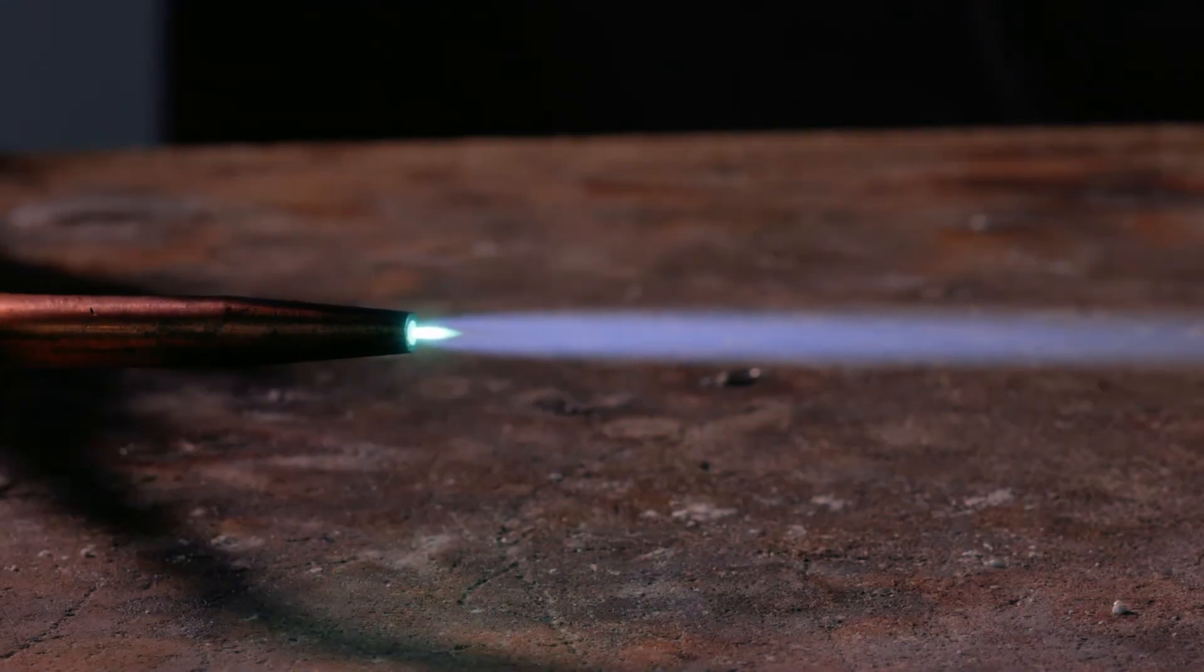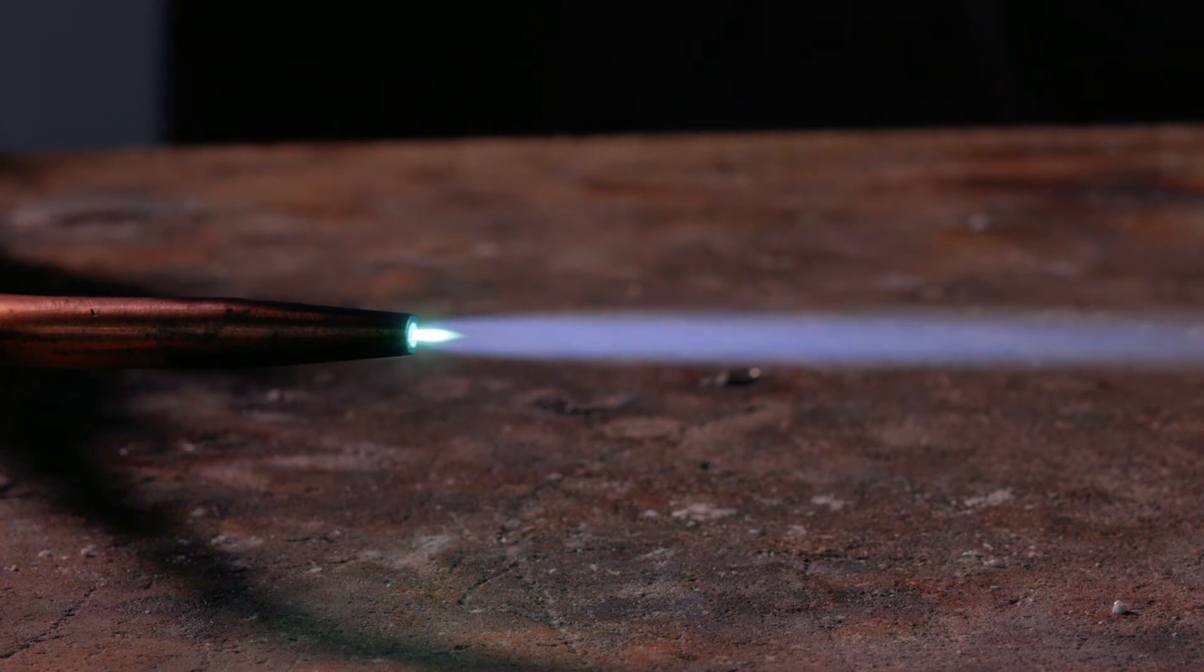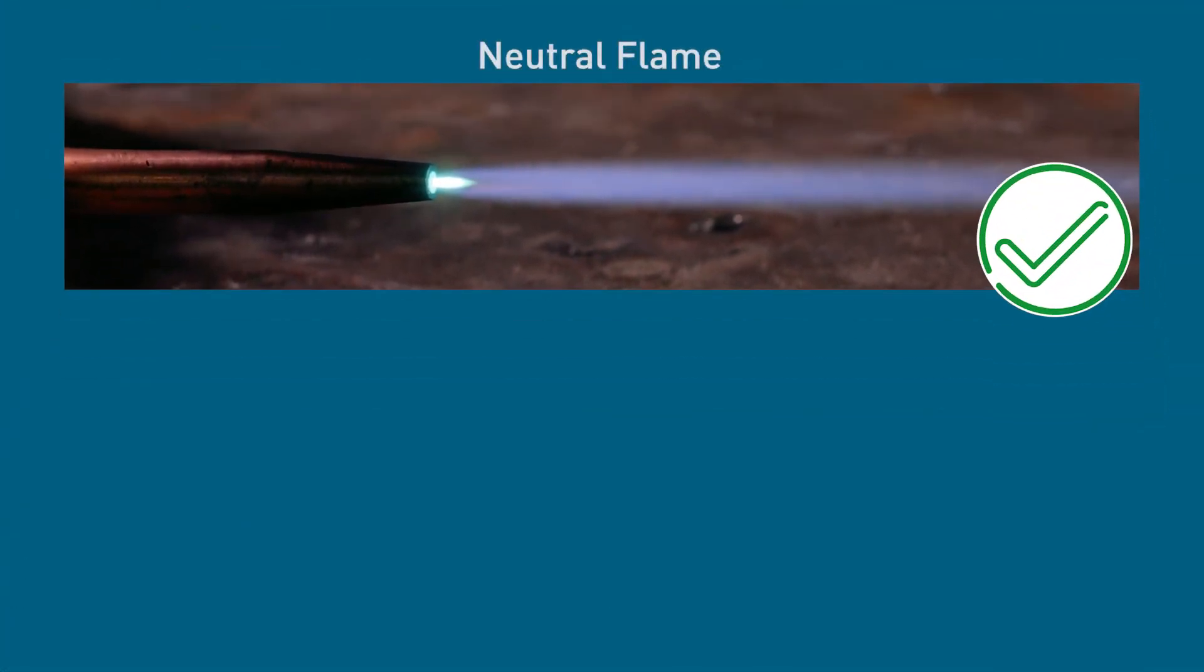The torch flame should have a clear and defined blue cone within the overall flame. This is referred to as a neutral flame.